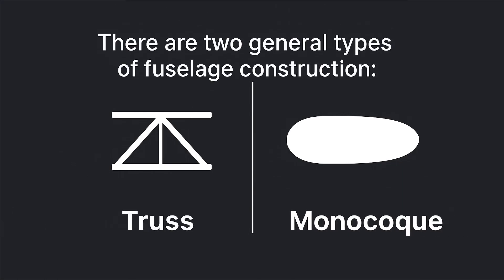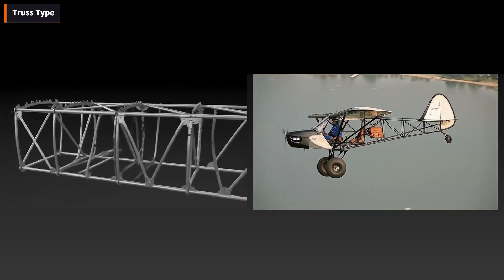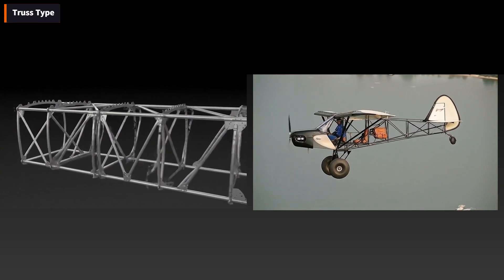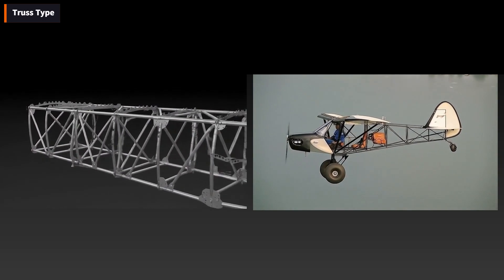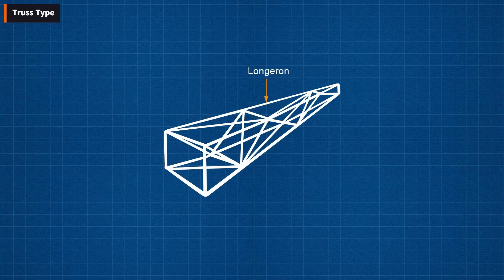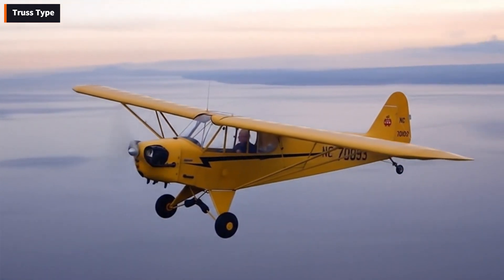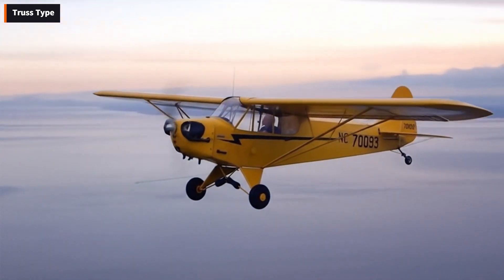There are two general types of fuselage construction: truss and monocoque. A truss is a rigid framework of beams, struts, and bars designed to resist loads. These frames are often built from welded steel tubing, though some light aircraft use aluminum alloy trusses. The framework is usually covered with fabric, and every member shares the load whether in tension or compression.